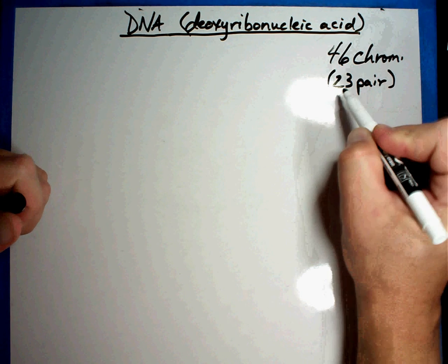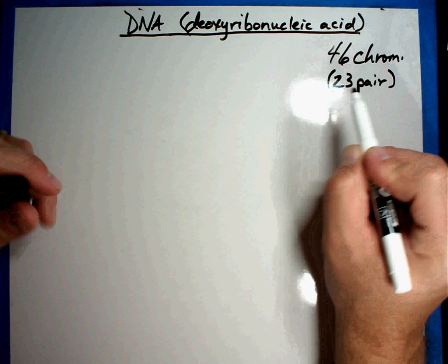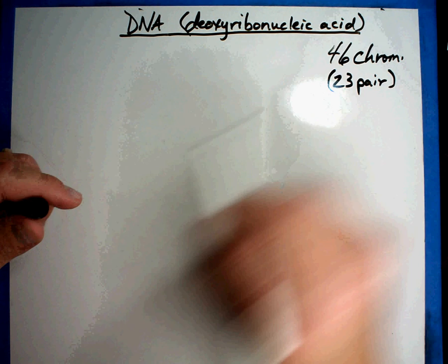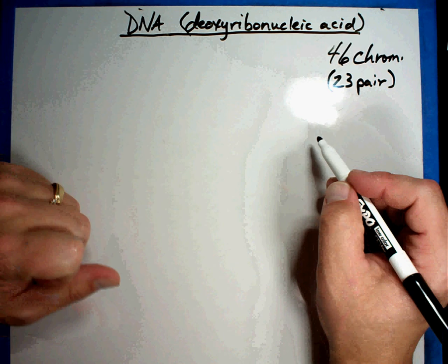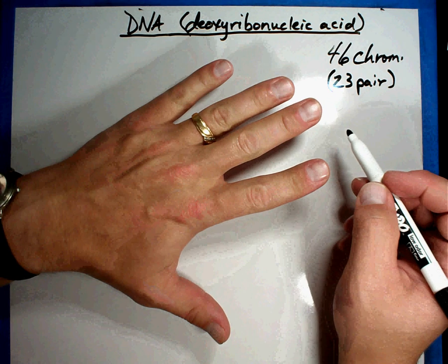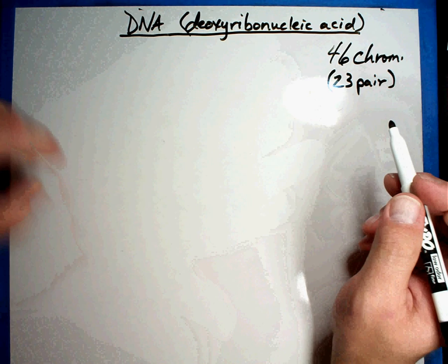You get 23 chromosomes from your mom and 23 chromosomes from your dad. So you get half your chromosomes from your mom, half from your dad. Together they make 46 chromosomes that make you. It tells everything about you. Tells you what eye color you'll have, how tall you'll be, what size hands you'll have, how your nails are formed. Everything about you and me comes from our chromosomes.